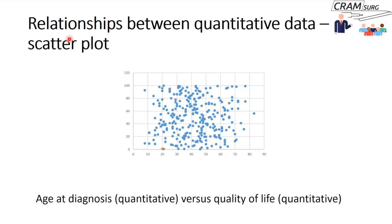If you want to describe the relationship between two quantitative variables, you plot a scatter plot. For example, comparing age of diagnosis with quality of life — both quantitative. Remember that in a scatter plot, you shouldn't draw a regression line, because you're simply describing the relationship between two sets of data, not trying to infer or predict one from another.